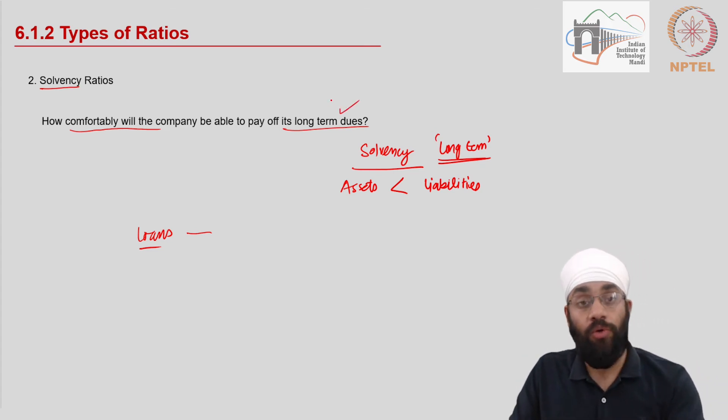So these first two indicators, the liquidity ratios and solvency ratios, they deal with a company's ability to pay off short term and the long term liabilities.